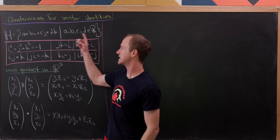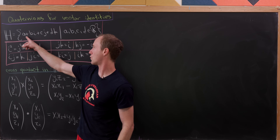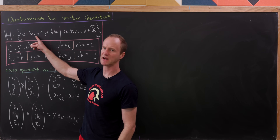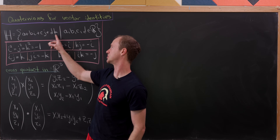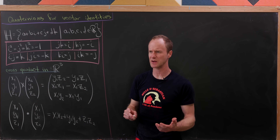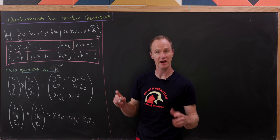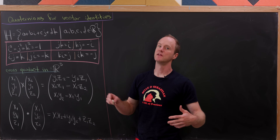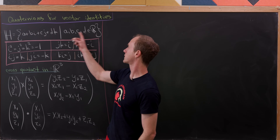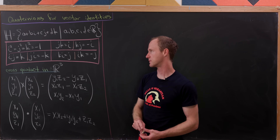As a set, they're linear combinations of the number one, a vector called i, a vector called j, and a vector called k. Or maybe you could think of those as imaginary quaternions and not vectors, but this does form a vector space. It's a real vector space, so a, b, c, and d are real numbers.